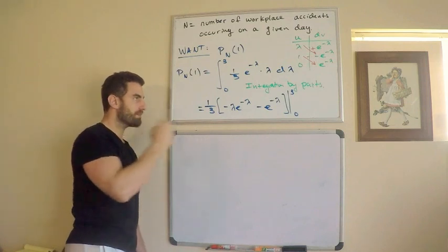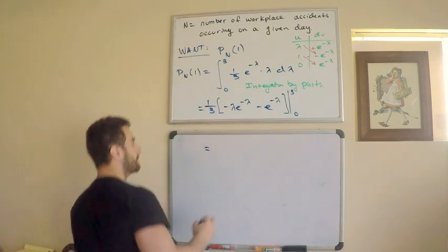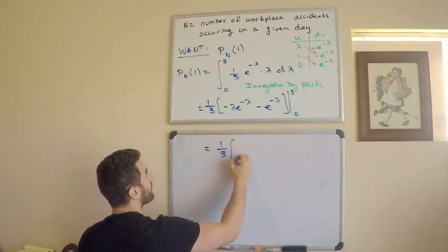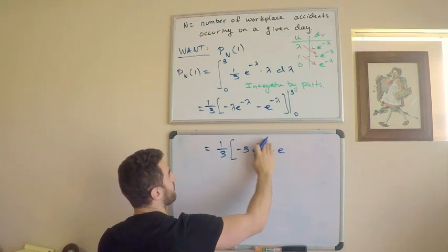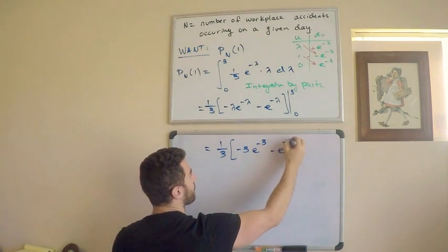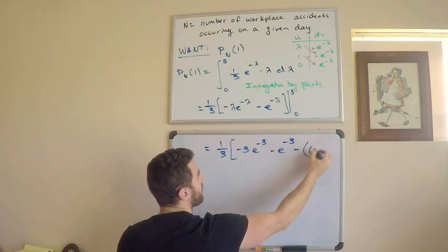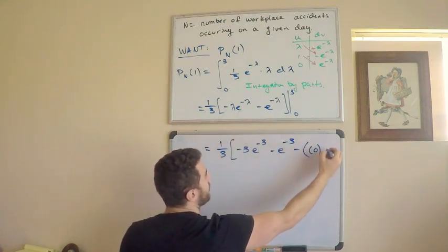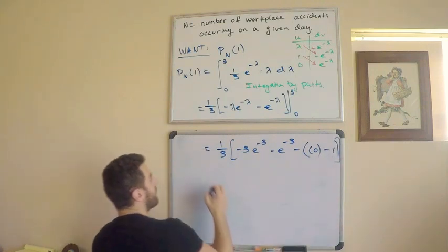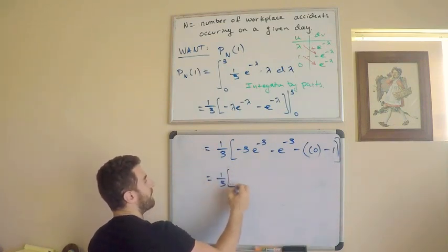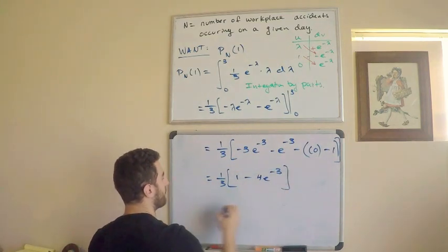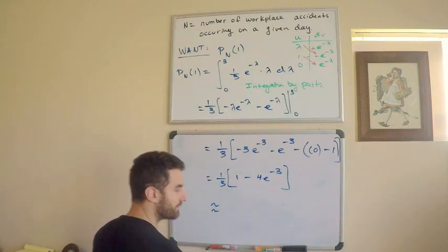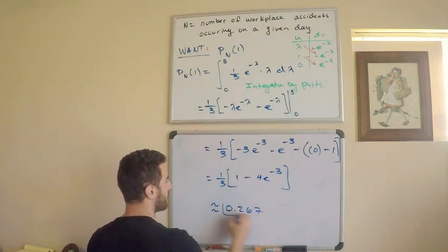So easy peasy, right? Plug in the endpoints, we're good to go. So this is equal to one-third, and then I have negative 3 e to the negative lambda, minus, sorry, e to the negative 3, negative, minus e to the negative 3. And then minus, and I plug in 0 first I get 0, then I plug it in here and I get minus 1. Rewriting this, this is one-third. Inside this quantity here, this is going to be 1 minus 4 e to the negative 3, and this is approximately, what? 0.267. That is my answer.